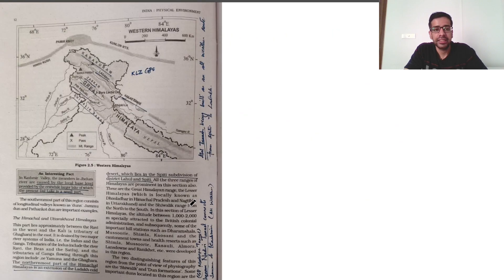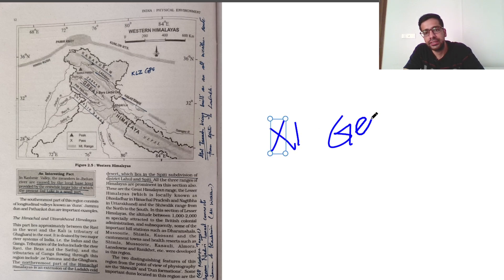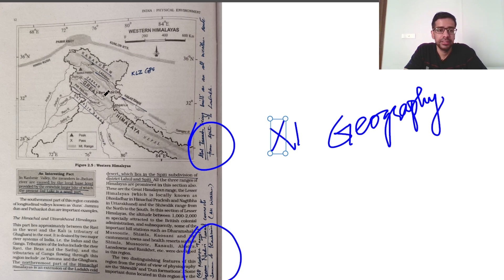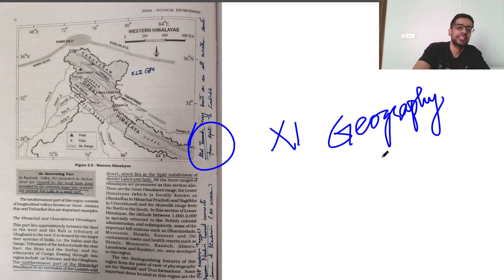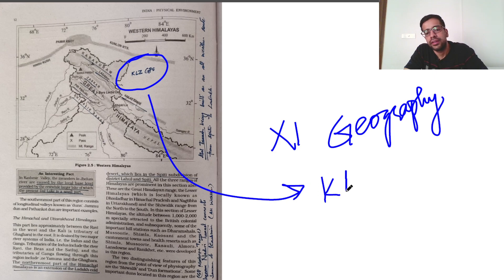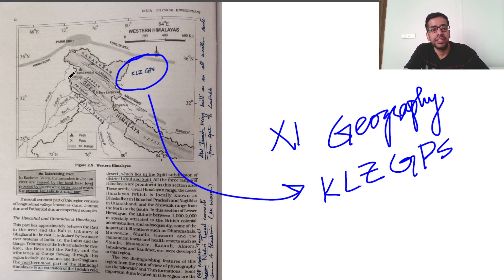For instance, this is the Class 11 Geography NCERT. If you look at it, I have written things in the margins — for example, Atal Tunnel, S.P. Mukherjee Tunnel, and Chenani-Nashri Tunnel, which are tunnels in the Himalayas in India. I have also used the acronym KLZGPS.